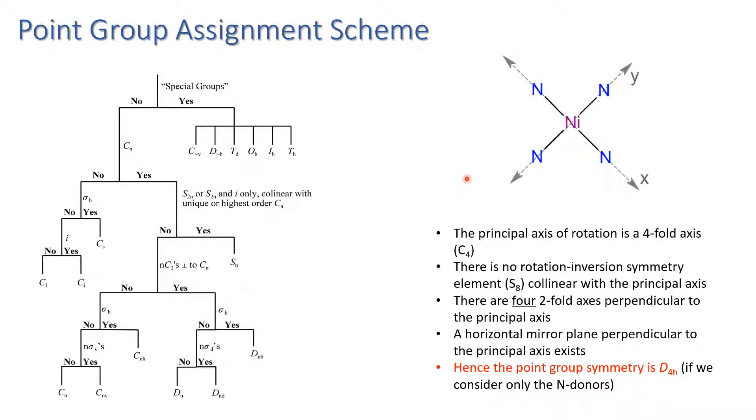Step one, first you assign the point group of the system. Square planar nickel 2 with four nitrogen donors in the plane. If you follow the normal point group assignment scheme, we note that the principal axis of rotation is a C4 axis. There is no S8 symmetry element. We've got four C2 axes perpendicular to the principal axis and there's a horizontal mirror plane. So in a nutshell, point group symmetry is unambiguously D4h if we have the approximation that we can ignore the chelating ligand.